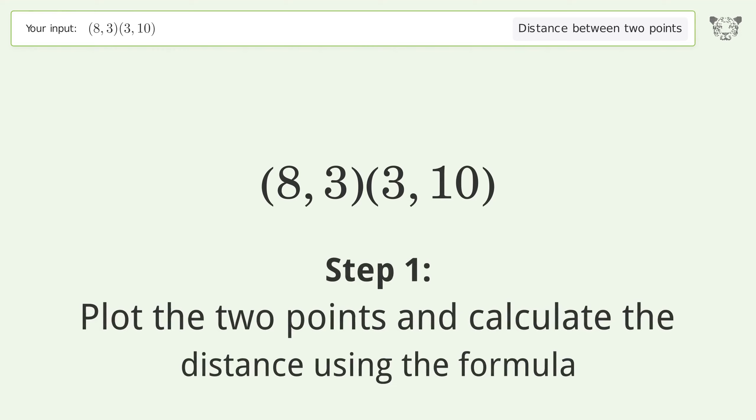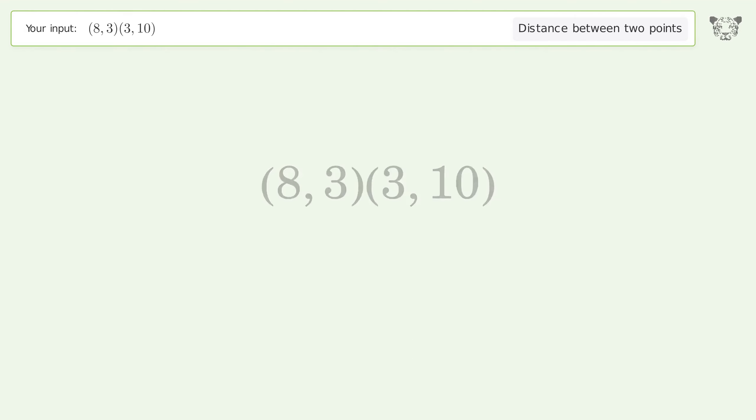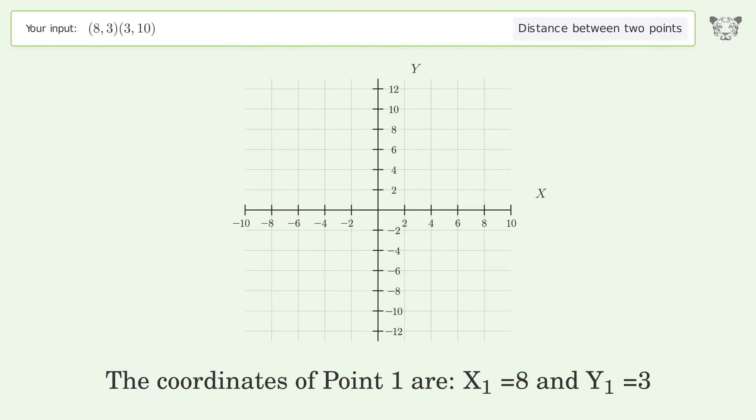Plot the two points and calculate the distance using the formula. The coordinates of Point 1 are x1 equals 8 and y1 equals 3. The coordinates of Point 2 are x2 equals 3 and y2 equals 10.